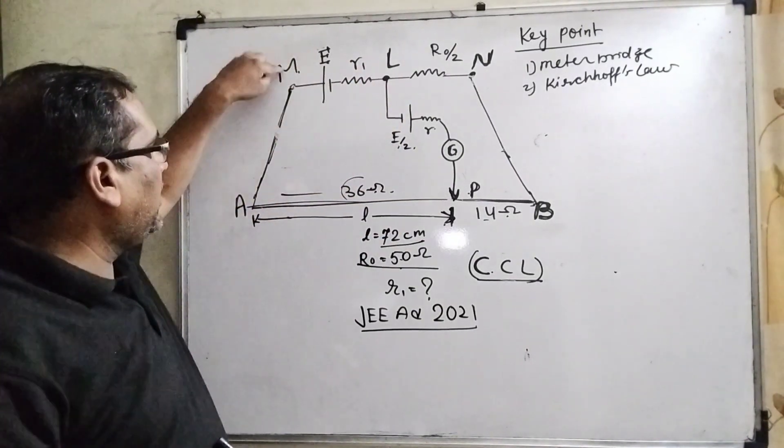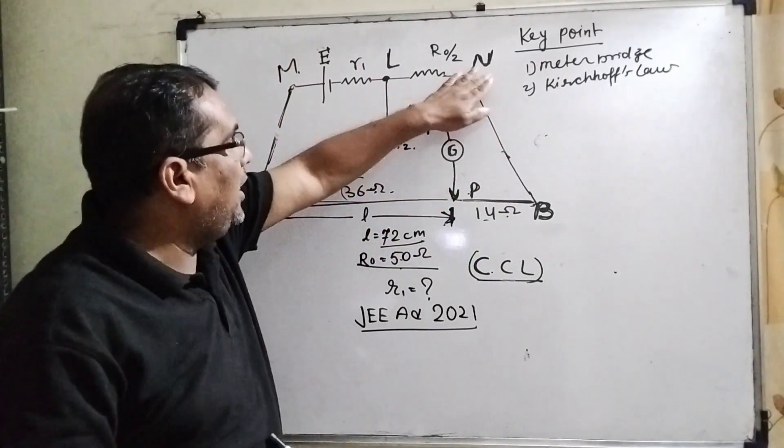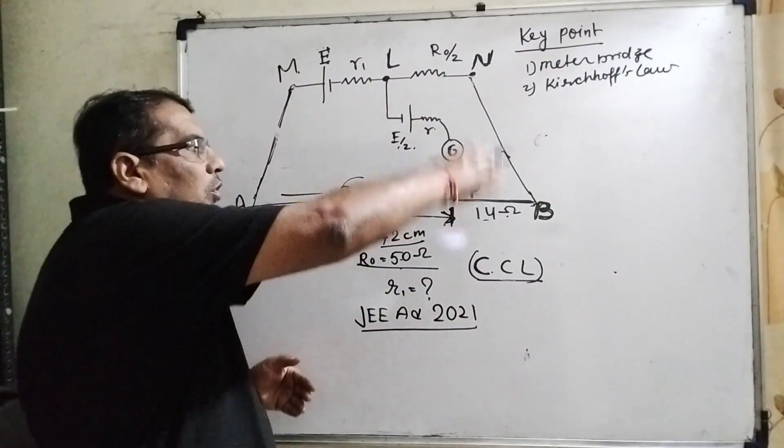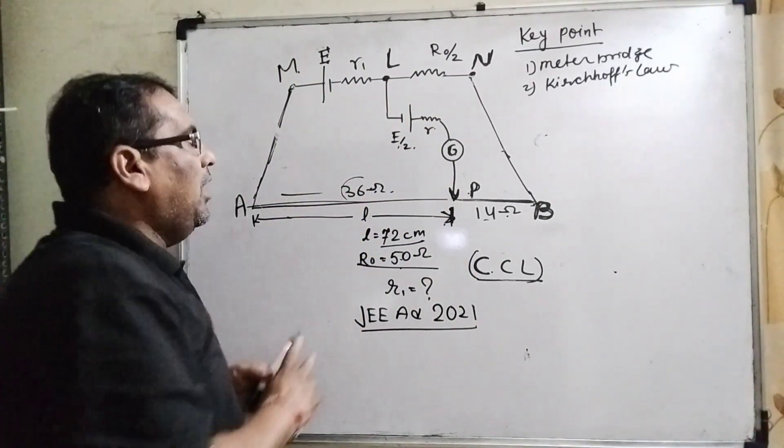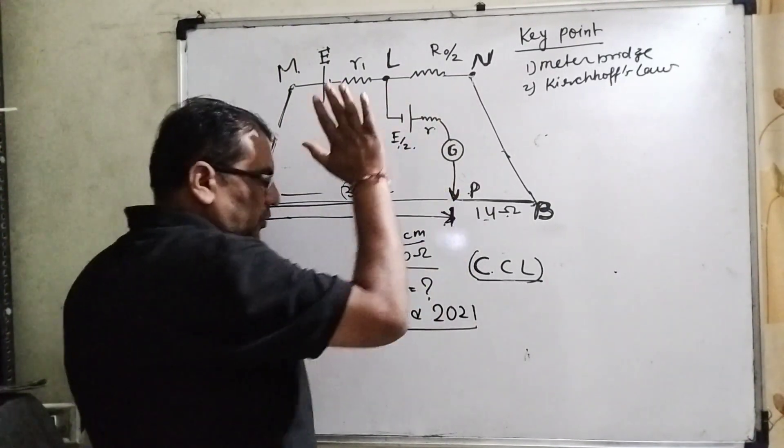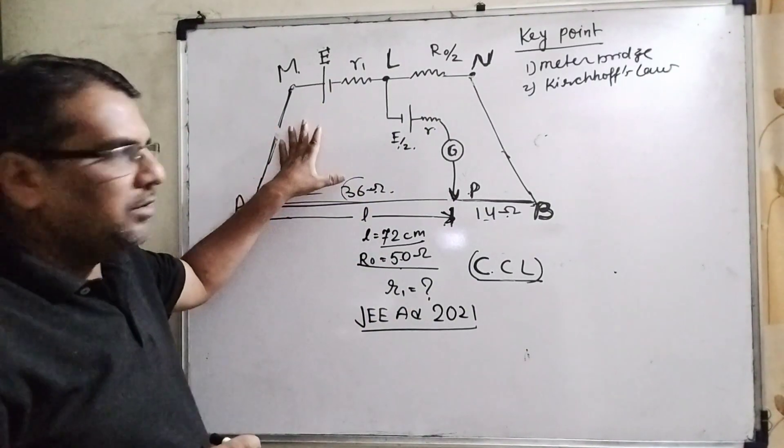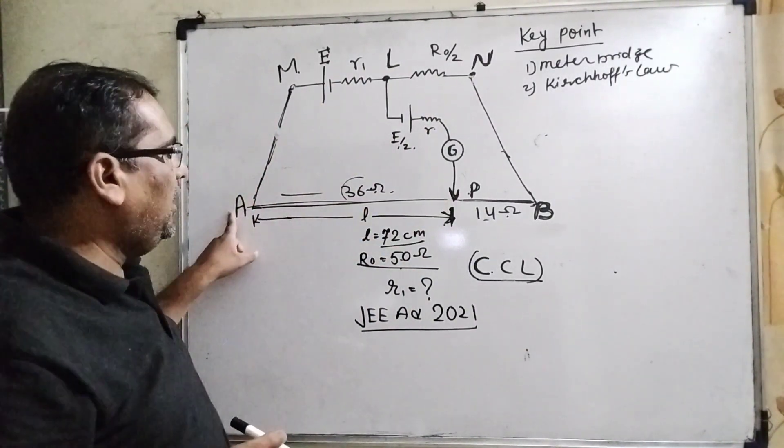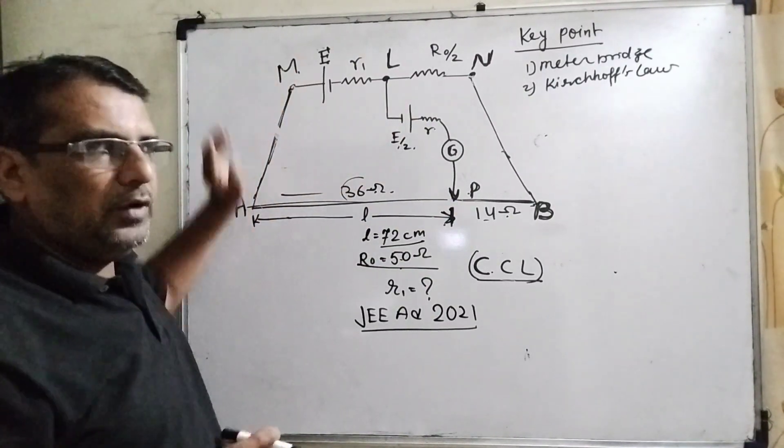You can take any closed mesh. I am taking, for our convenience, the path ABMN.